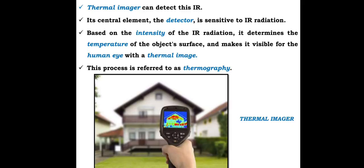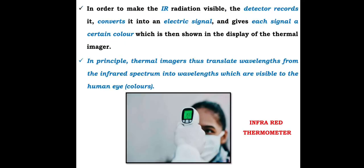Below shows the home in a thermography picture of the detector. In order to make the IR radiation visible, the detector records it, converts it into an electric signal, and gives each signal a certain color which is then shown in the display of the thermal imager. In principle, thermal imagers translate wavelengths from the infrared spectrum into wavelengths which are visible to the human eye as color.